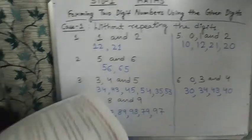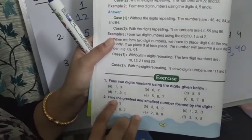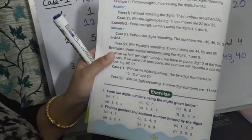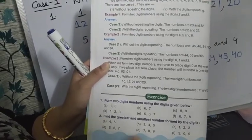Now see your book, page number 34, Exercise question number 1: Form two-digit numbers using the digits given below. And question number 2: Find the greatest and the smallest number formed by the digits. You have to form numbers and identify the greatest and smallest. Question number 1 and 2 are your homework — page 34, exercise questions 1 and 2.